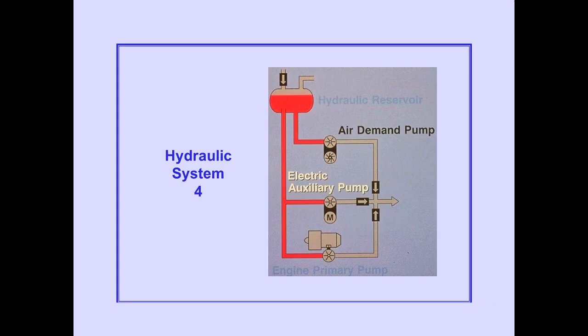Like System 1, System 4 has a bleed-air demand pump. System 4 also has an electric auxiliary pump. The auxiliary pump is used only for ground operations.